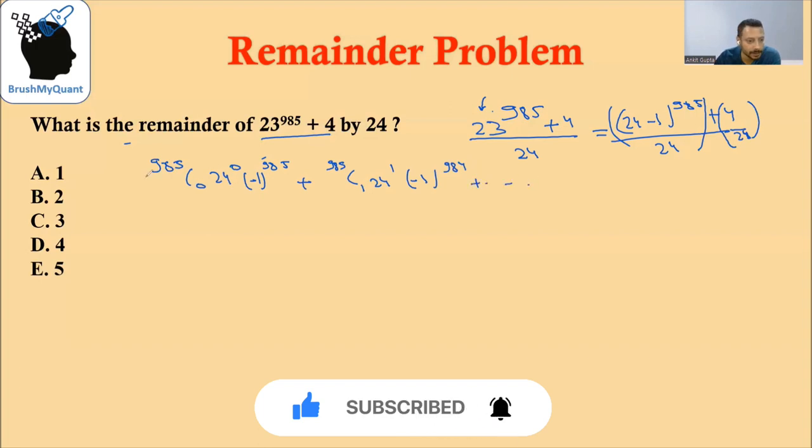If you look at the terms, the top part will always be 985. The bottom part will start with 0 and keep increasing—it will become 1, 2, and so on. The second-to-last term will have 985 C984, 24 raised to 984, minus 1 raised to 1.